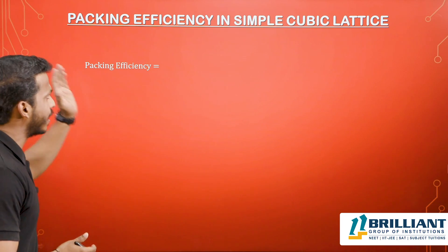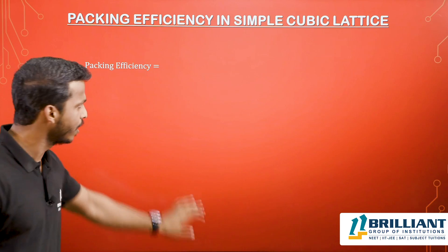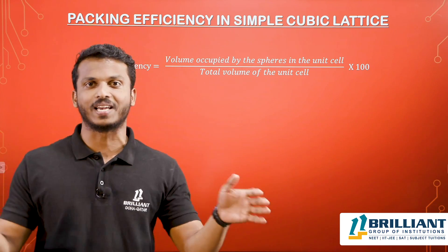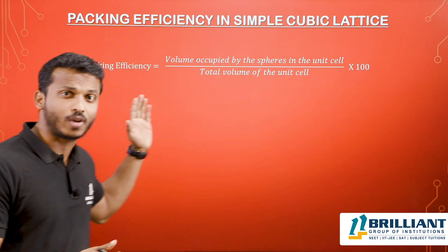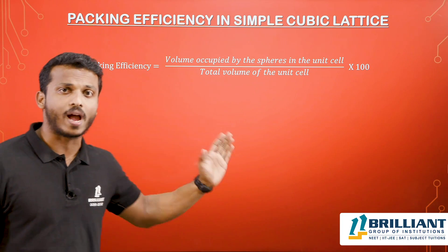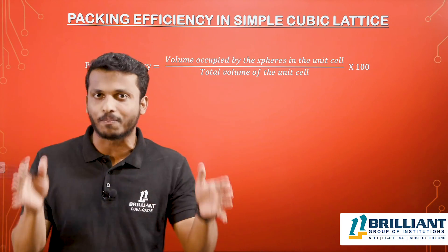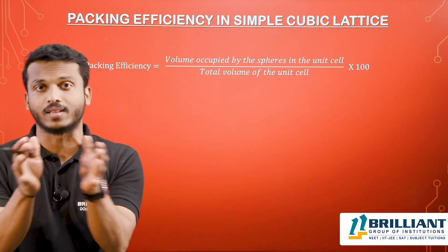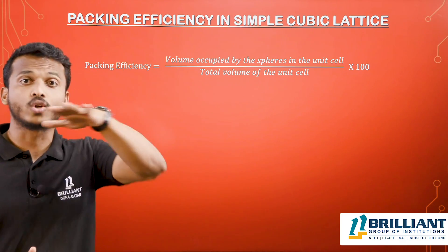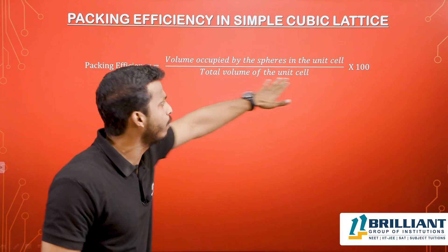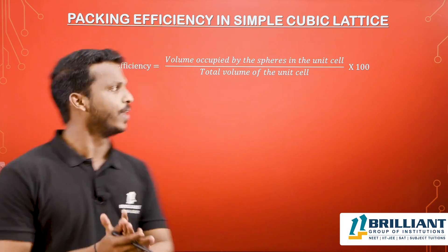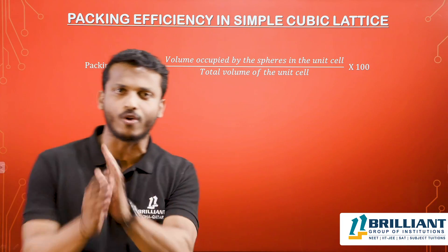A simple cubic system is also known as a primitive unit cell. Packing efficiency is calculated by the equation: volume occupied by the spheres in the unit cell divided by the total volume of the unit cell, multiplied by 100, because packing efficiency is expressed as a percentage. The total volume of the unit cell is a³, where a is the edge length.